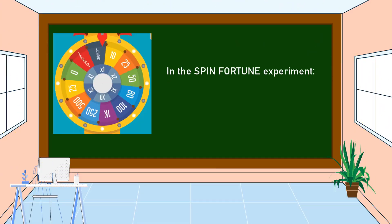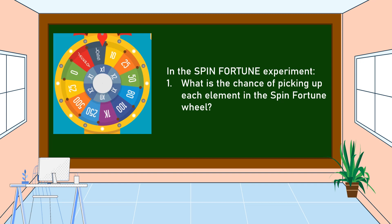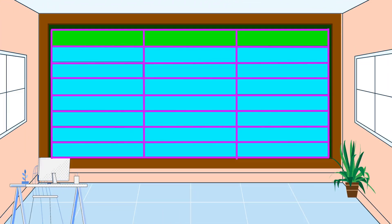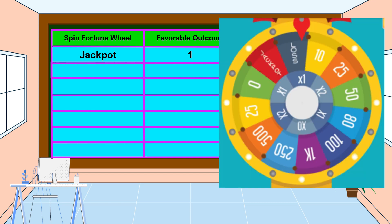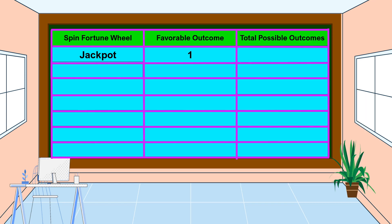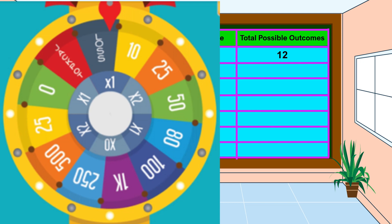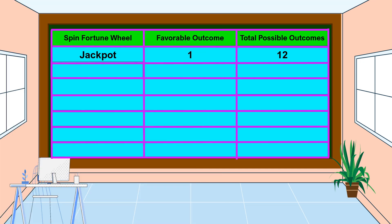In the Spin Fortune experiment, what is the chance of picking up each element in the Spin Fortune wheel? To know the answer, let's list down all the favorable outcomes and the total possible outcomes. For jackpot, the favorable outcome is 1, as we can see in the Spin Fortune wheel — there is only one jackpot. So the favorable outcome is 1. For the total possible outcomes, the answer is 12, because we count all the elements in the Spin Fortune wheel. The same applies to the other elements in the Spin Fortune wheel.